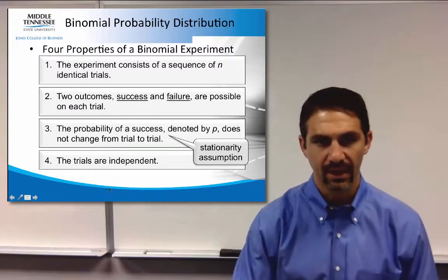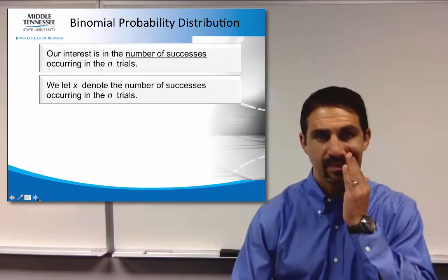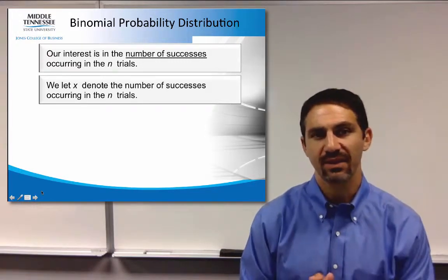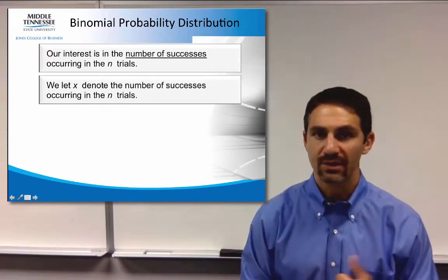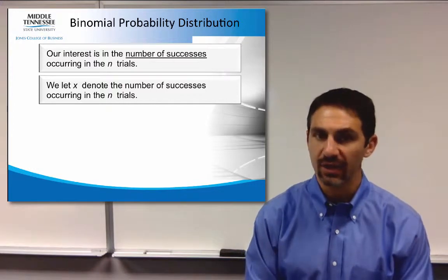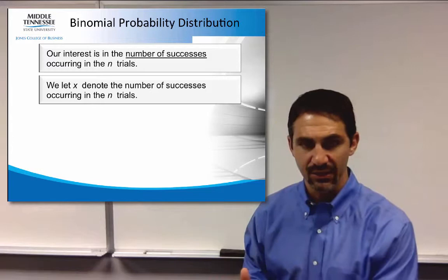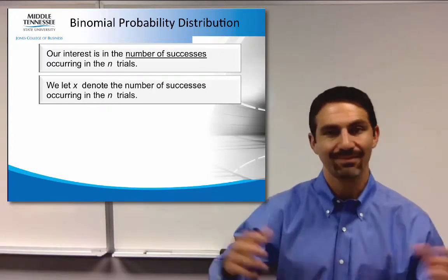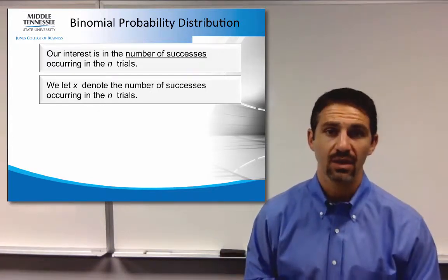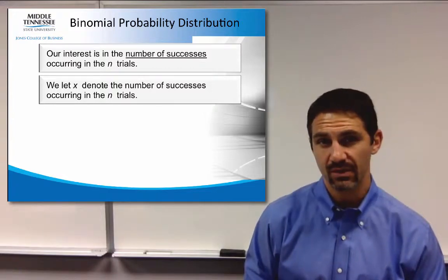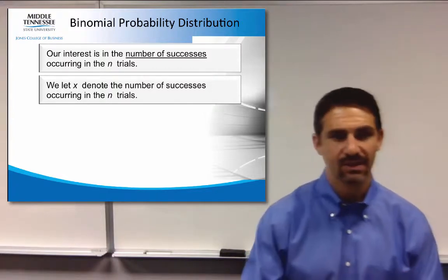So let's take a look at an example here. Just a couple last little things. Our interest is in the number of successes occurring. And what this means is, based on past history, if I was to look at five sales calls, what's the probability of being successful on two out of five of those?